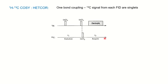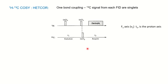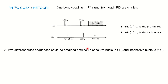Broadband decoupling is applied through the acquisition channel, recording only the FID related to the singlet carbons. Correlation occurs with respect to t1 and t2, and the proton decoupler is not turned on in the evolution period (t1 period) where the correlation occurs — so the decoupler is off during evolution but on during acquisition. In HETCOR, the f1 axis with respect to t1 belongs to the proton axis, and the f2 axis with respect to t2 belongs to the carbon axis. Two different pulse sequences could be obtained between the sensitive nucleus (proton) and C13, which is the insensitive nucleus.